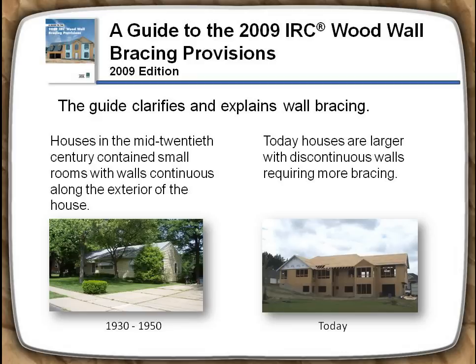Over time, the typical house has changed shape. Houses in the mid-20th century contained small rooms with walls continuous along the exterior of the house. Today, houses are larger with discontinuous walls requiring more bracing. Compare the photos of a house built between 1930 and 1950 to a house built after 2000.